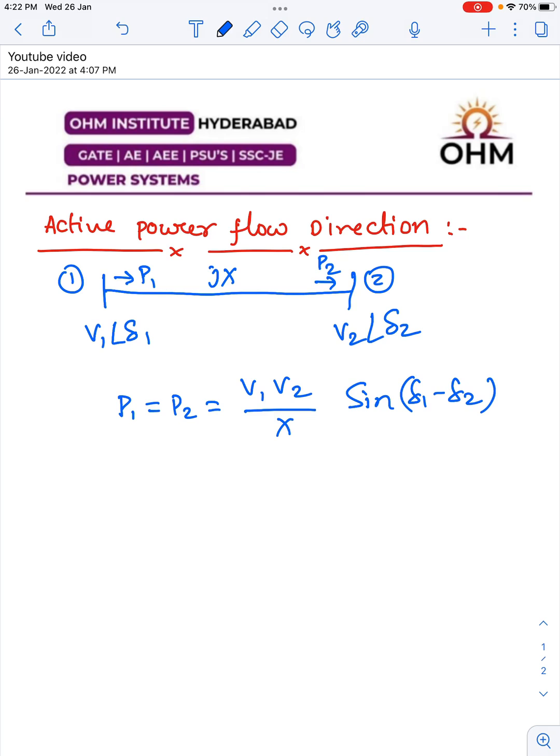From basic mathematics, sine of a positive angle is positive, and sine of a negative angle is negative. Therefore, if δ1 - δ2 is positive, then P1 and P2 are positive, meaning the active power flows from bus 1 to bus 2.